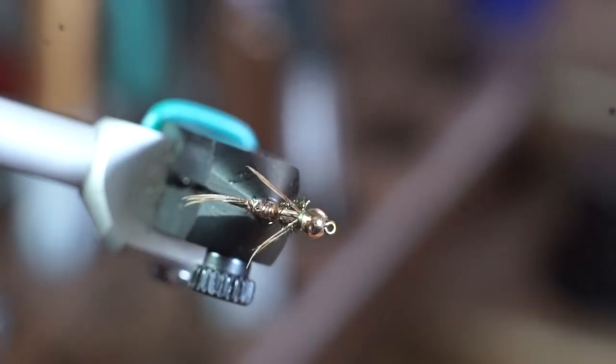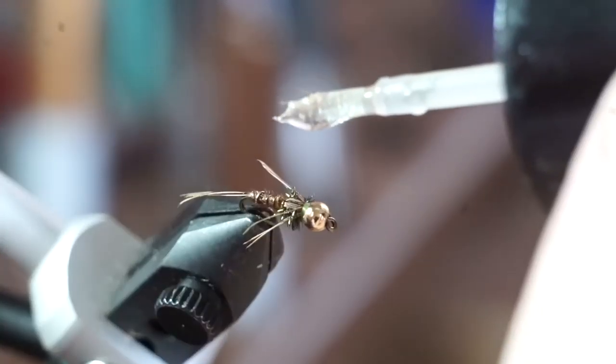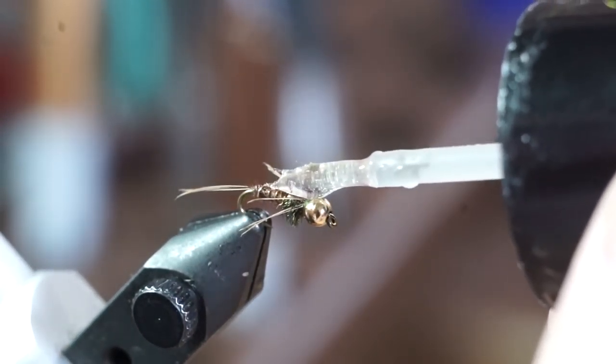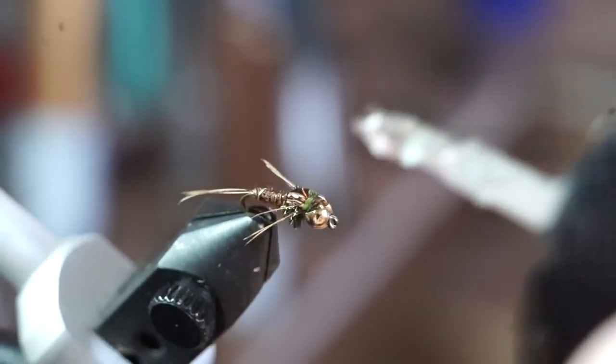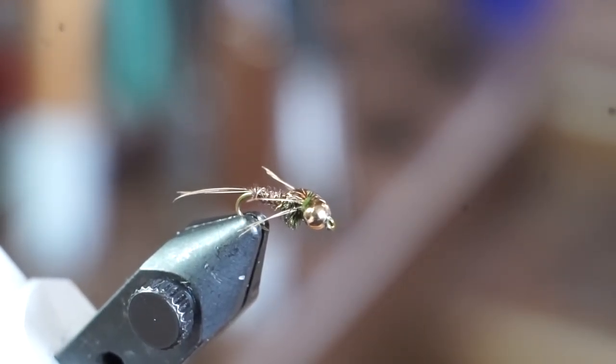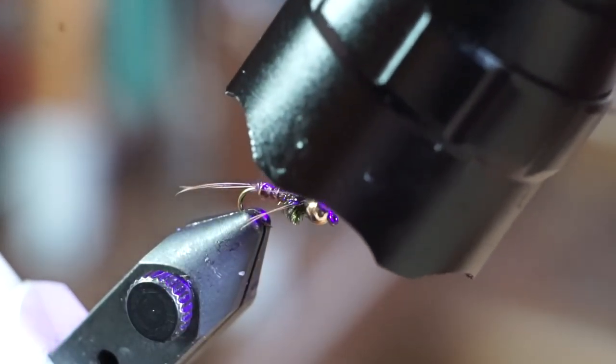To cement the head and to ensure the fibers stay in place, put a drop of head cement on top of the thorax and over the whip finish. I like using this UV resin called Bone Dry. Let it soak into the whip finish a little before curing though.